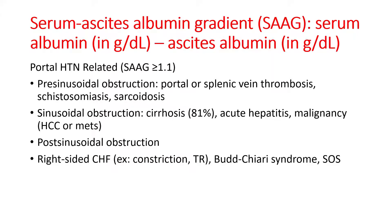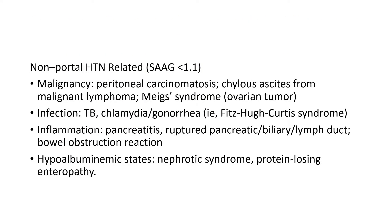One of the most important investigations is calculation of the Serum Ascites Albumin Gradient (SAAG), used to identify the possible cause of ascites. It is calculated as serum albumin (g/dL) minus ascites albumin (g/dL). If due to portal hypertension, the SAAG will be 1.1 or above; if due to non-portal hypertension related causes, it is usually less than 1.1.